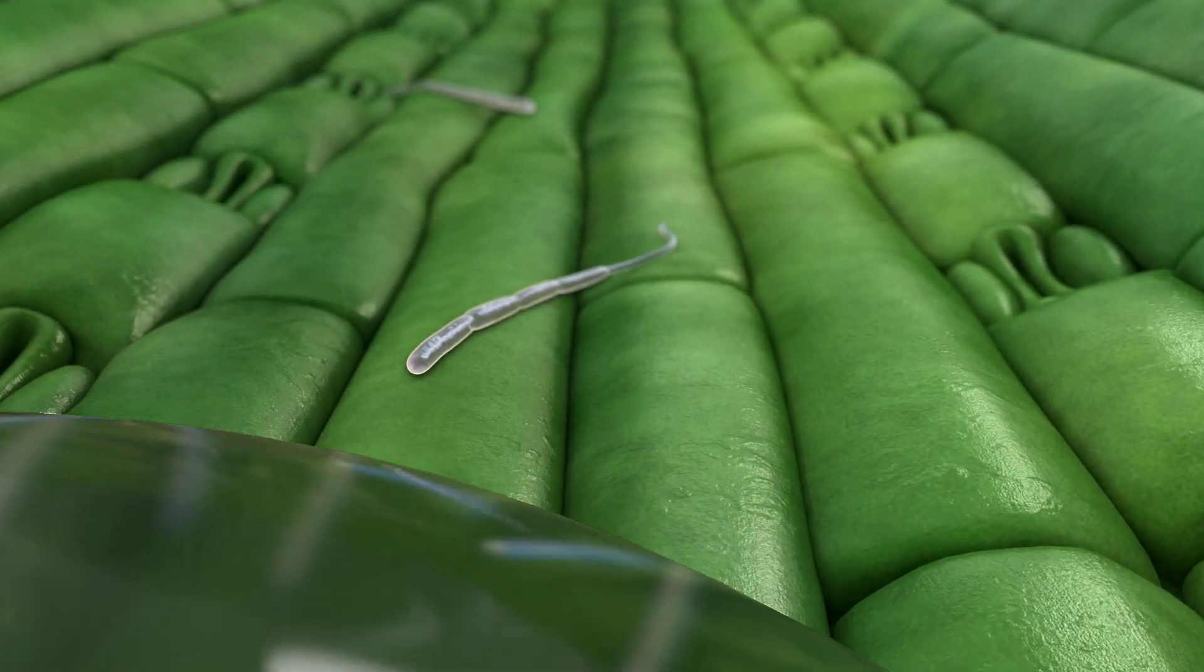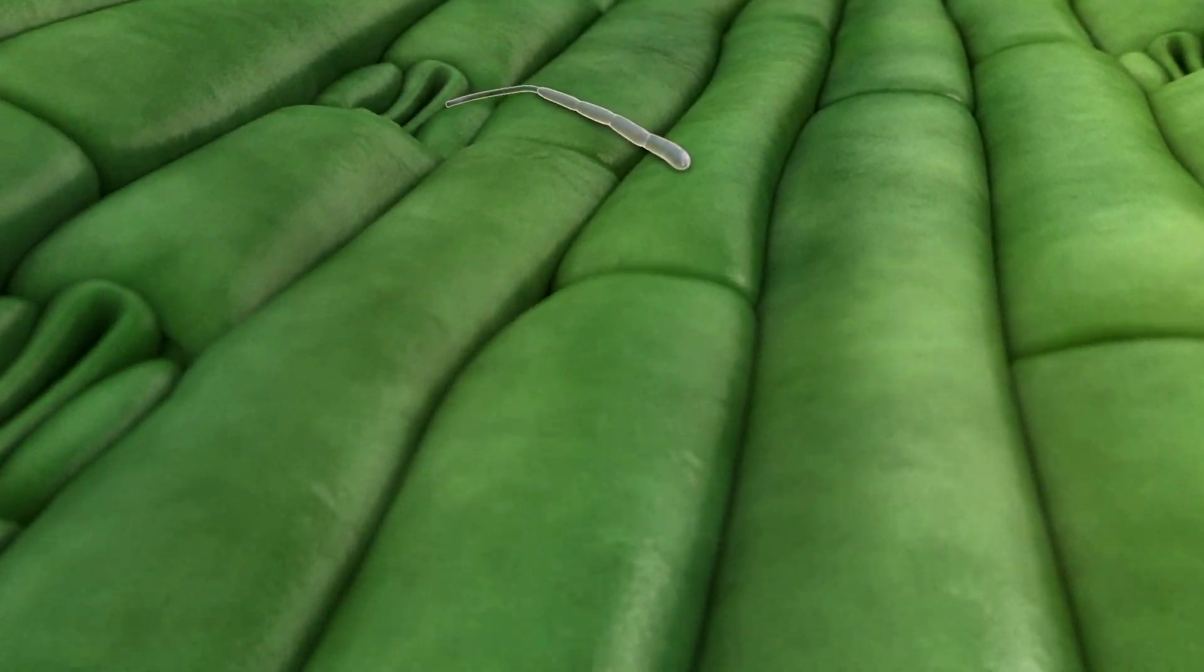When it's wet enough, the spores create a germ tube that enters the leaf through the tiny openings called stomata, used by the plants for gas exchange.